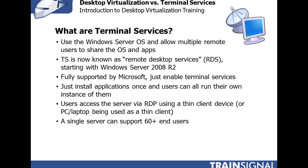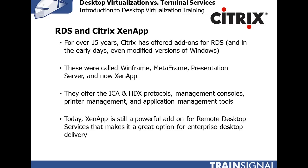You install applications once on the server and then all users can run their own instance or session of that application. You can provide an end user their own desktop running on the server, or you can provide individual applications. Users can access the server or their applications via RDP with a Remote Desktop Connection client, a thin client device, or even through a web browser. Remote Desktop Services is very powerful — a single server with enough hardware can support 60 or more end users.